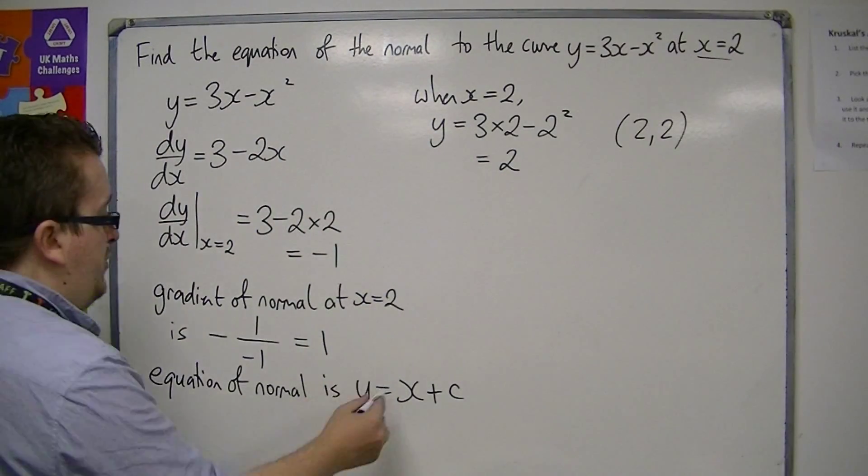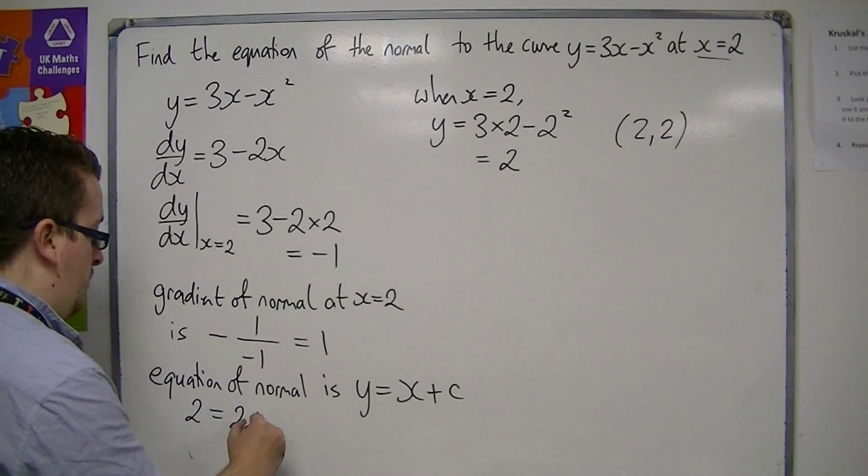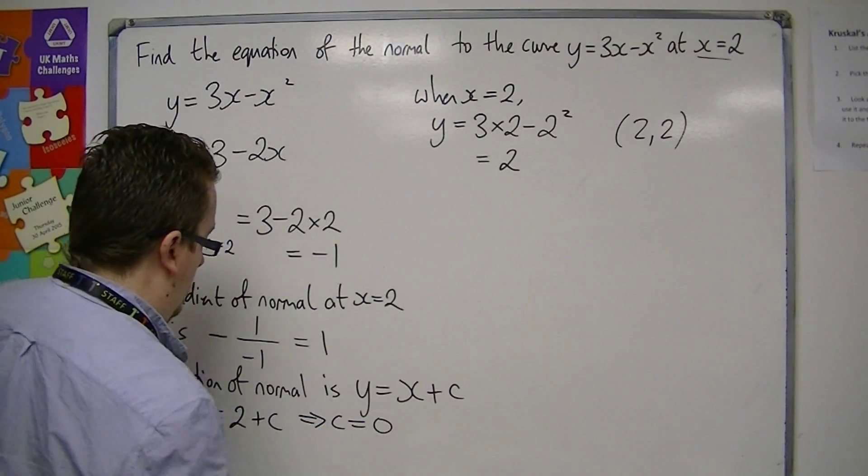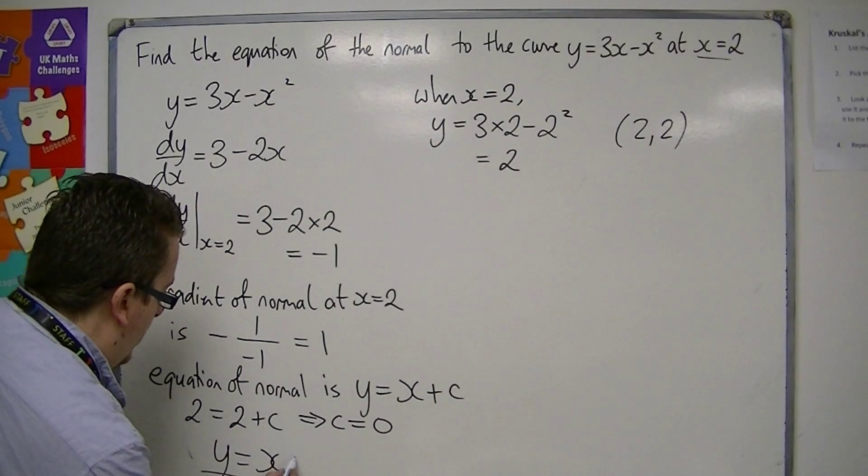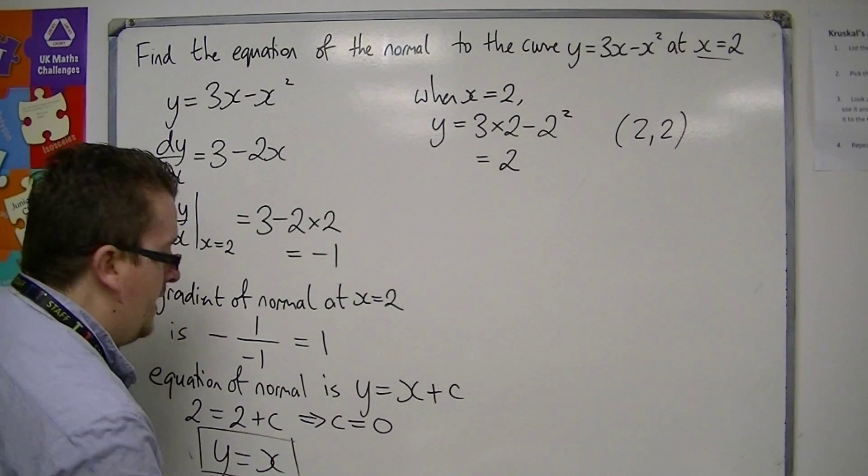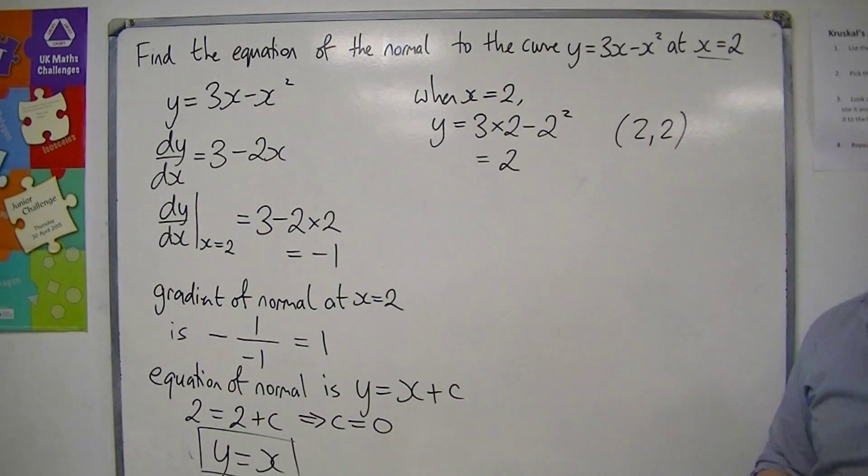So if I substitute (2, 2) into this, 2 is equal to 2 plus c, so c must be 0. So the equation of the normal that I'm looking for is actually y equals x. And that is the equation of the normal that I was looking for.